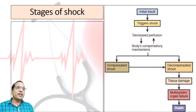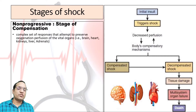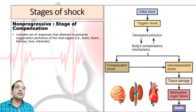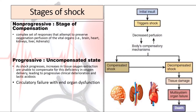Initially, if there is an insult or injury, it may trigger shock, and the body itself attempts to preserve oxygenation and perfusion to the vital organs — brain, heart, kidney, liver, and adrenals. That is called the non-progressive or compensated stage, where compensatory mechanisms develop. If shock progresses and there is increased tissue oxygen extraction unable to compensate for the deficiency in oxygen delivery, that leads to progressive clinical deterioration and lactic acidosis, causing circulatory failure with end organ dysfunction, known as the uncompensated or decompensated stage.